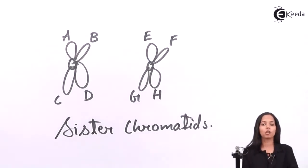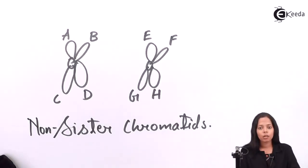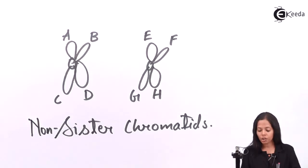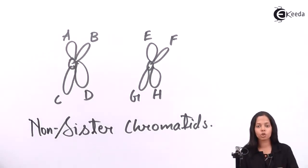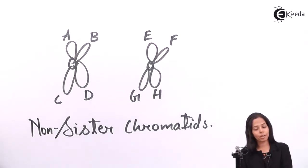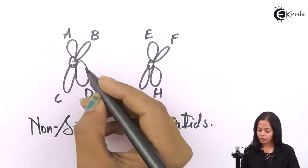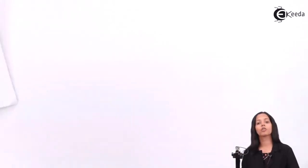Speaking about non-sister chromatids: B and E are non-sister chromatids, B and G are non-sister chromatids, H and A are non-sister chromatids. In short, chromatids of different chromosomes are called non-sister chromatids. Now — crossing over which took place in pachytene of prophase 1 of meiosis 1: was it between sister chromatids or non-sister chromatids? Correct — it takes place between non-sister chromatids, because parts of different chromosomes were getting crossed over.